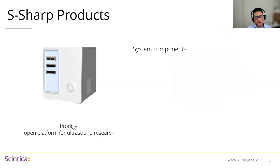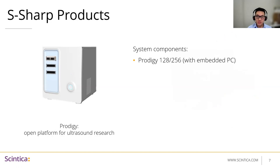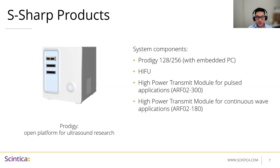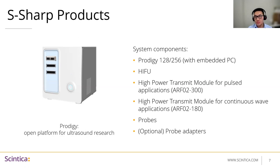There are a few components used together with the Prodigy. This includes simultaneous transmit-receive channels with an embedded PC, a HIFU unit with up to 256 channels, two high-power transmit modules — one for pulsed applications and one for continuous wave applications — and their own probes. Very importantly, they can also provide probe adapters to ensure that whichever probes you may already have in your lab would be able to be used with the system as well.